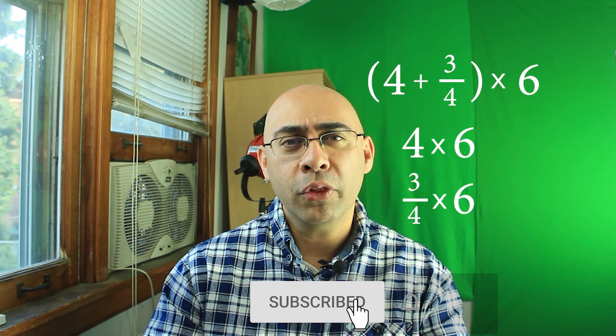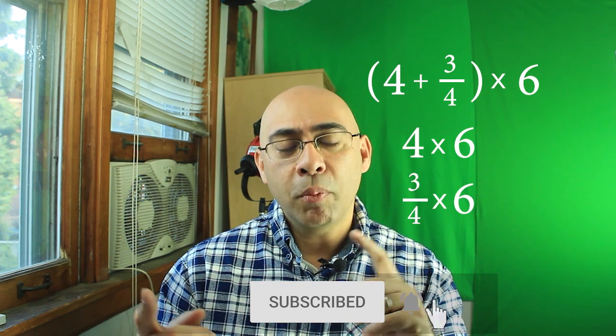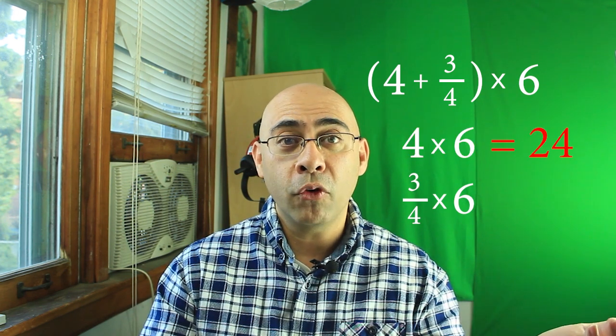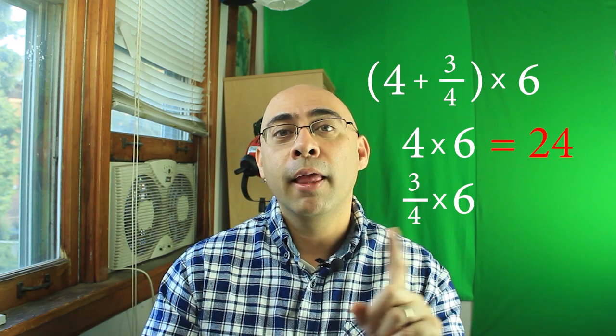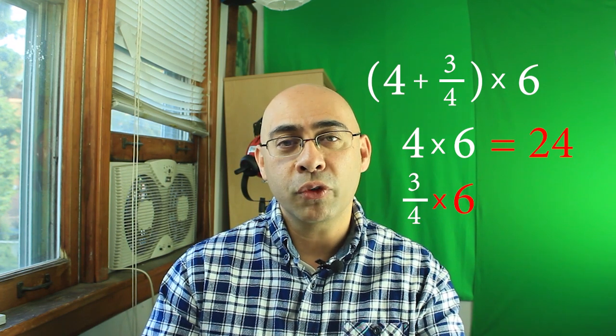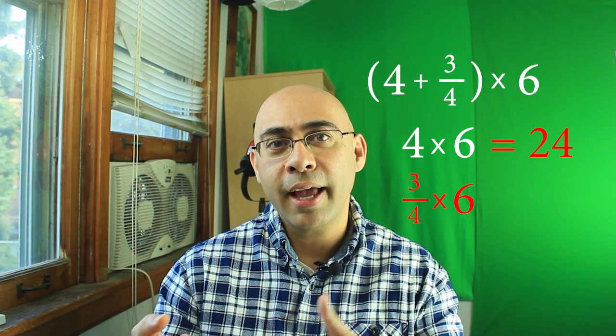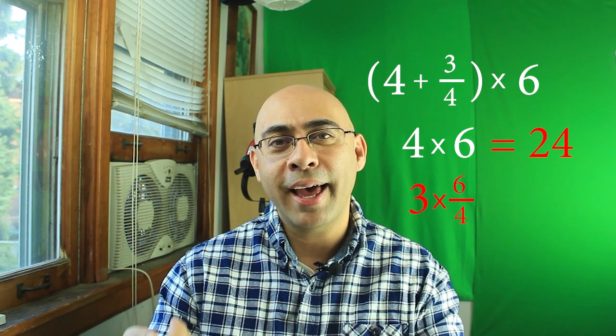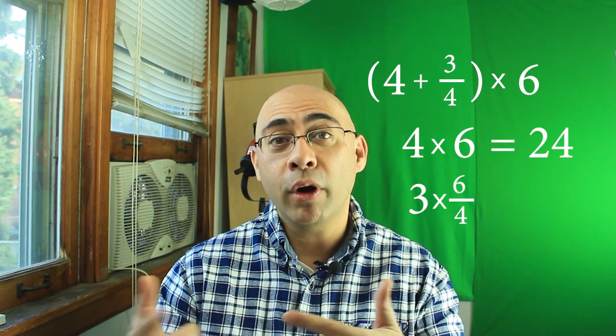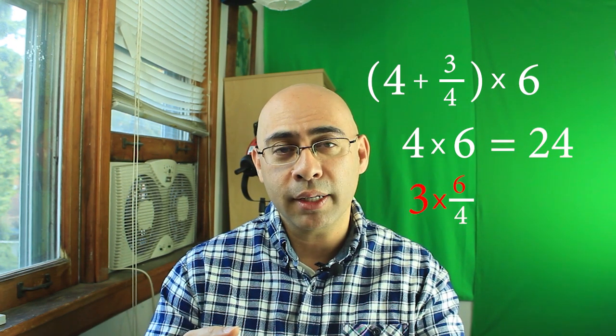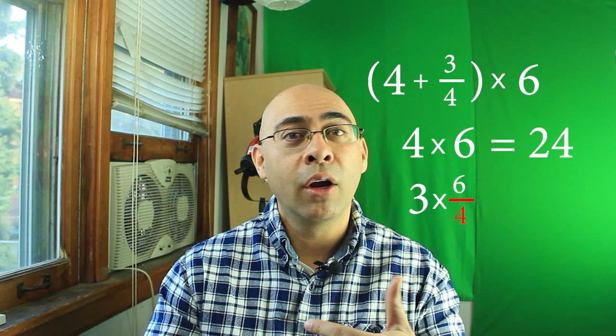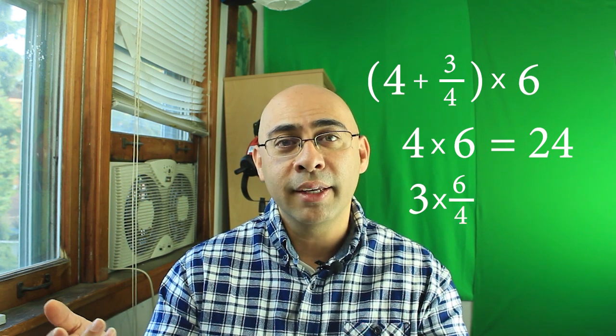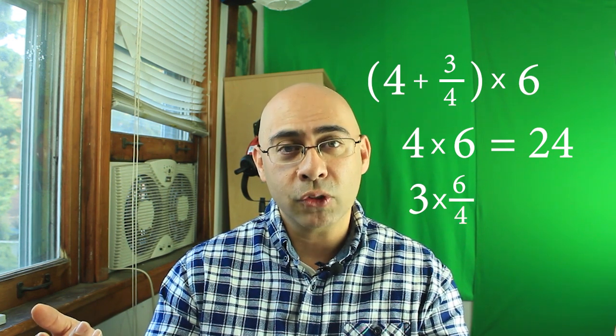So with this example four and three-fourths times six, we multiply the six times four to get 24 and we could just set that aside. Now the tricky part is six times three-fourths. So six times three-fourths basically means six divided by four and then multiply that times three. Or if you wanted to multiply first six times three and then divide that by four. Whatever order you do that is fine. It doesn't matter, you'll still get the same answer.